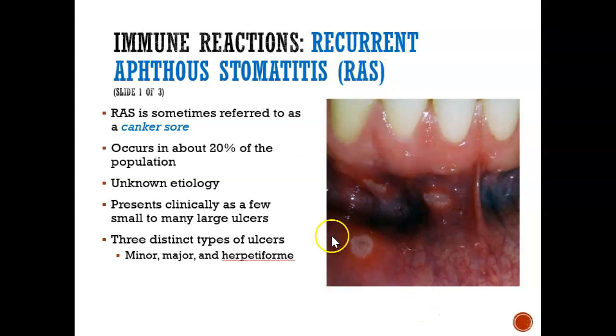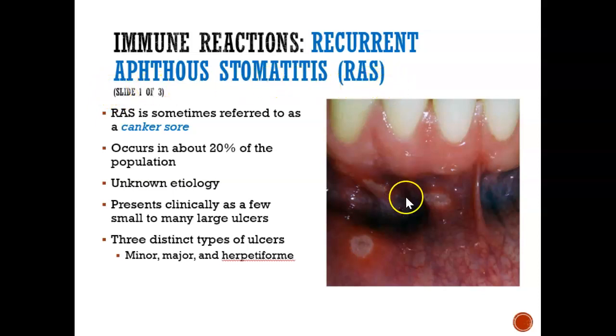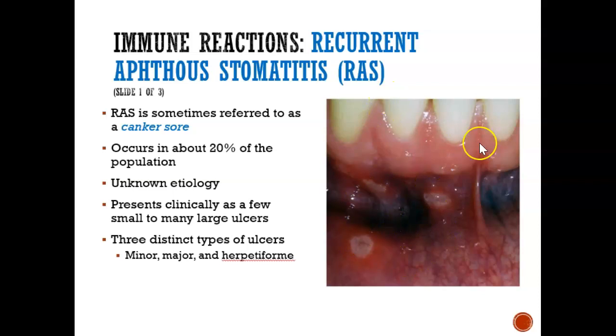So let's look at the next type of lesion, which is known as recurrent aphthous stomatitis, or RAS. The layman's term for this is canker sores.